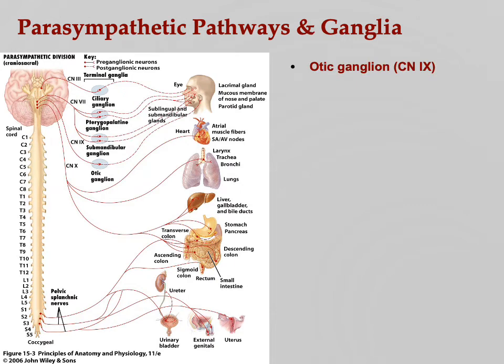Let's look at some parasympathetic ganglia. The otic ganglion — otic relating to the ear — is located up near the ear and comes from cranial nerve 9. It goes to the parotid gland, a large salivary gland right next to your ear, stimulating salivation. Remember, parasympathetic is rest and digest, so salivation is a parasympathetic response.